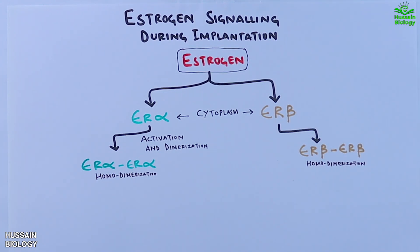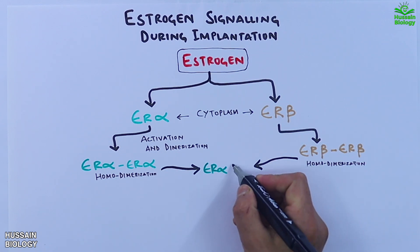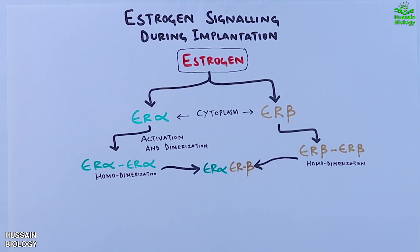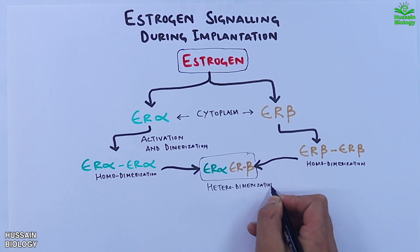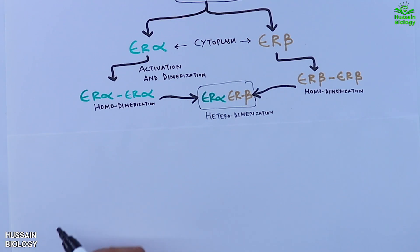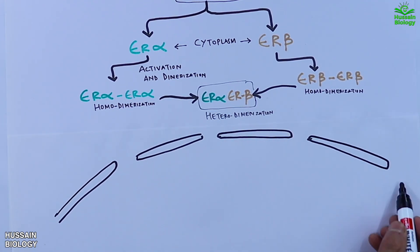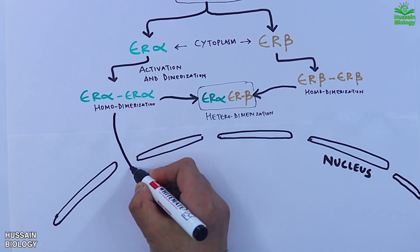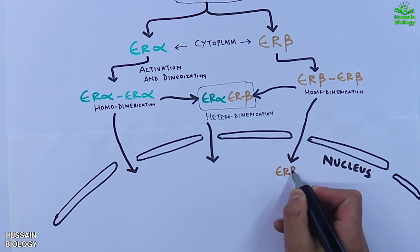But there's more to the story: we also get heterodimerization, where ER alpha and ER beta can pair up to form the heterodimer — the ER alpha/ER beta complex. Once the dimers, whether ER alpha/ER alpha, ER beta/ER beta, or the heterodimer ER alpha/ER beta, are formed, they move towards the nucleus of the cell.